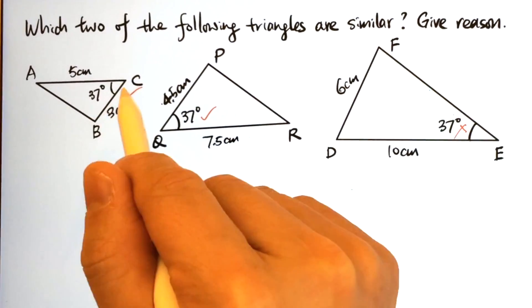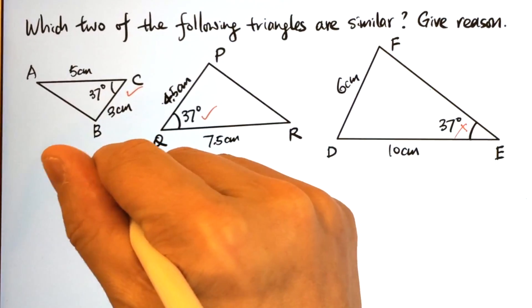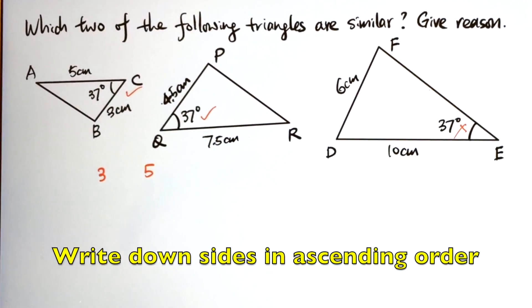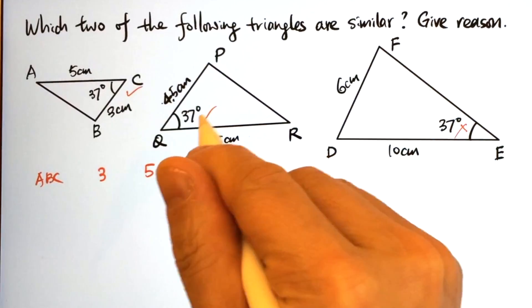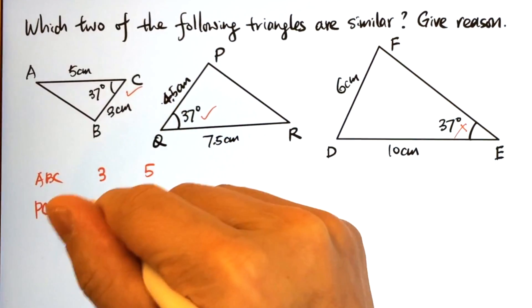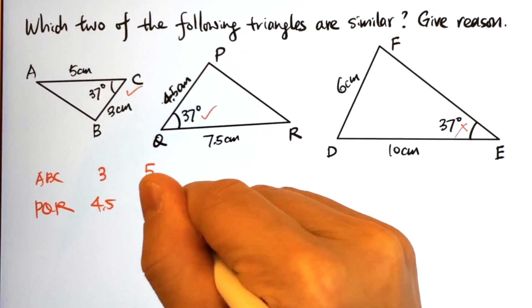Let's compare the sides. For ABC, we write down the sides in ascending order: 3, 5. What about PQR? 4.5, 7.5.